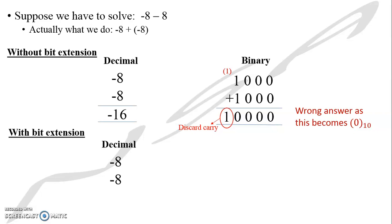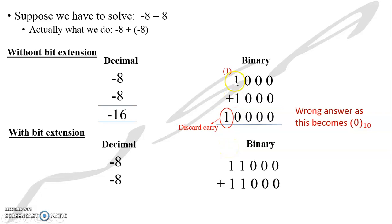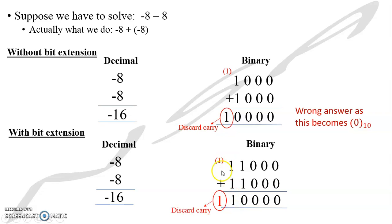With bit extension, I was working in 4 bits where minus 16 was not in my range since I only had minus 8 to plus 7. So I extend by 1 bit, making it 5 bits. Minus 8 is a negative number, so the most significant bit is 1 — I extend it with 1. After performing the addition in 5 bits and discarding the carry, I am left with bits equal to minus 16. This shows that by extending the bits, we have the range to represent the data correctly in 2's complement.